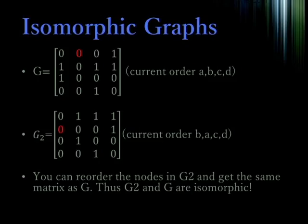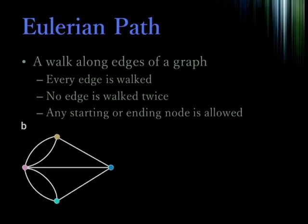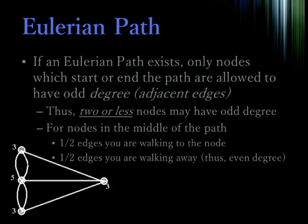Now that we know the basics of graphs, let's go back to bridges. The question of whether we can walk every edge of a graph without repeating an edge is called an Eulerian path, named after Euler. In an Eulerian path, we can start and end at any node, just like in the bridge problem. The degree of a node is the number of edges leaving that node. If an Eulerian path exists, there can be no more than two nodes with an odd degree. The intuition behind this is fairly clear.